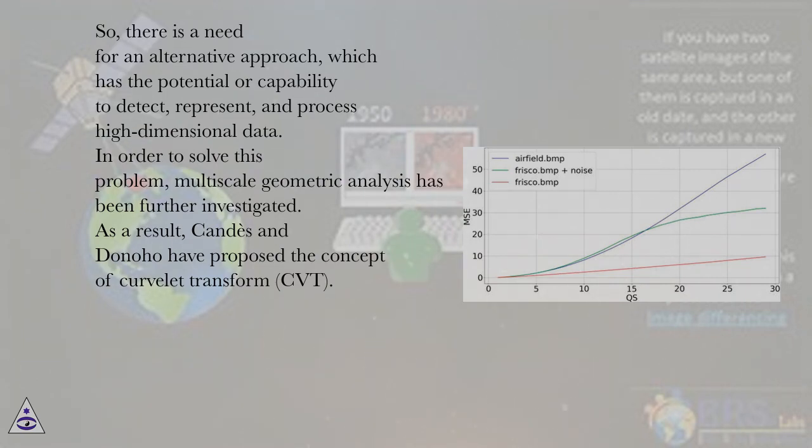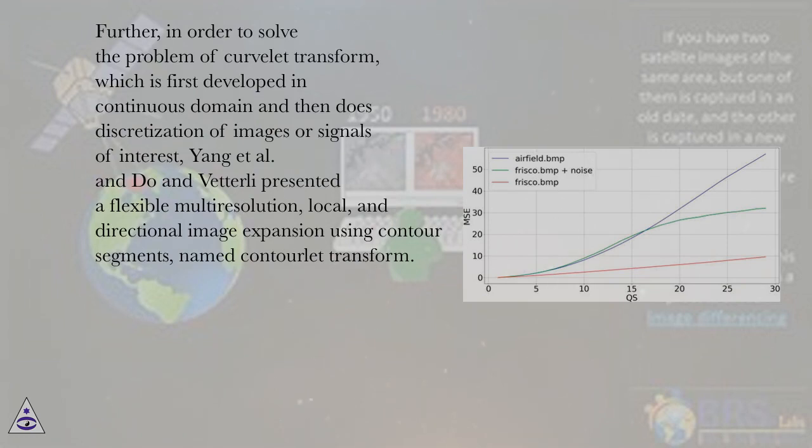In order to solve this problem, multi-scale geometric analysis has been further investigated. As a result, Candès and Donoho have proposed the concept of Curvelet Transform (CVT). Further, in order to solve the problem of curvelet transform which is first developed in continuous domain then discretized for images or signals of interest, Yang et al. and Do and Vetterli presented a flexible multi-resolution, local, and directional image expansion using contour segments named Contourlet Transform.